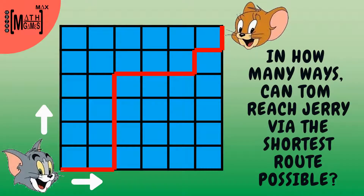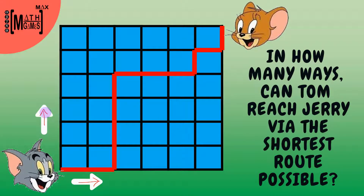Hello guys, welcome to my channel Maximum Math Games. The question of the day is: in how many ways can Tom reach Jerry via the shortest route possible? Tom has to reach Jerry while traveling in the direction of the arrows, traveling either horizontally or vertically, and he has to cover the minimum distance. Pause the video if you want to give this question a try.